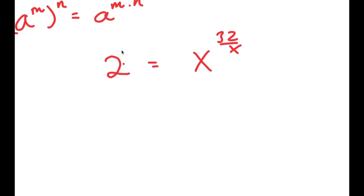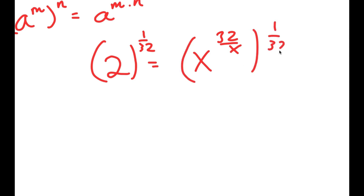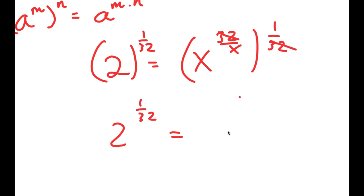From here, I'm going to take the power of 1 over 32 on both sides — we're doing this to get rid of the 32 on the right hand side. So from the left hand side, I just have 2 to the power of 1 over 32. From the right hand side, these two cancel out, so I get x to the power of 1 over x.